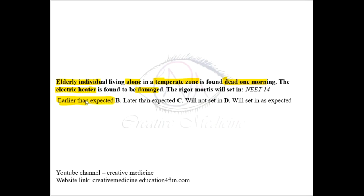Conditions where rigor mortis appears early is whenever there is lots of struggle or exhaustion, because in struggle and exhaustion the ATP utilization is increased. So in convulsive deaths like tetanus, strychnine, electrocution through an electric heater or electricity, lightning, and status epilepticus — in these conditions, rigor mortis appears early and also disappears early.